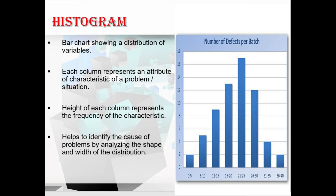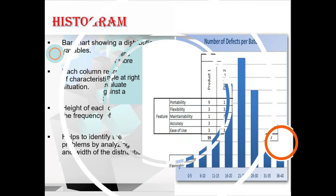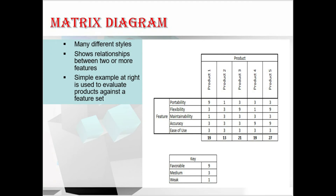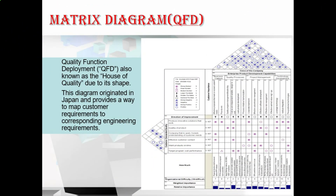Moving to matrix diagrams — the matrix diagram seeks to show the strength of relationships among factors, causes, and objectives that exist between the rows and columns that form the matrix. Referring to the slide, a simple example is used to evaluate the product against a future set of requirements.